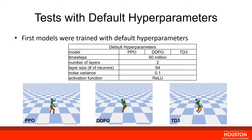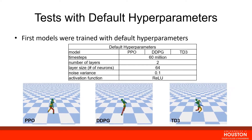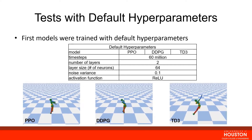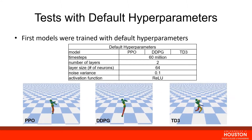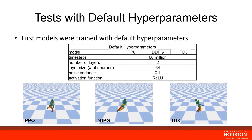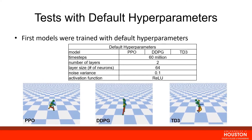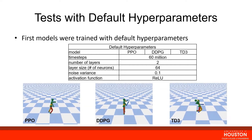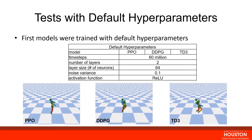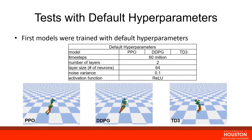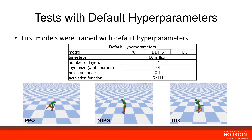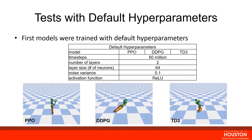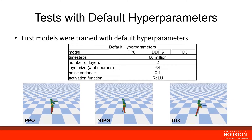Our initial test was to train models with the default hyperparameters. We trained PPO, DDPG, and TD3 for 60 million time steps, using default hyperparameters: two layers, 64 neurons per layer, noise variance of 0.1, and relu activation function. TD3 was the main successful algorithm — the robot continues to walk forward without falling over. PPO takes one step but then falls, and DDPG fails to even take one step.